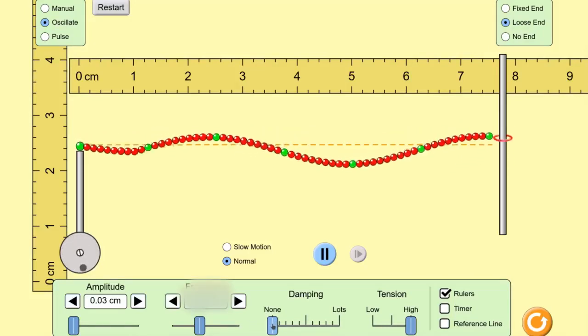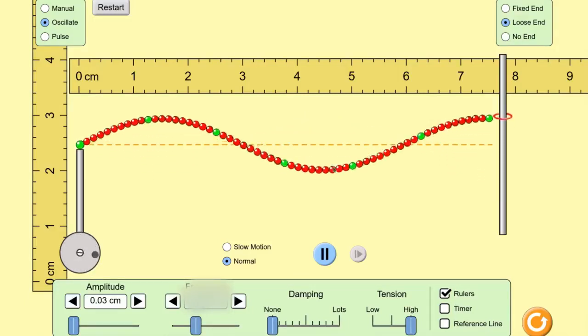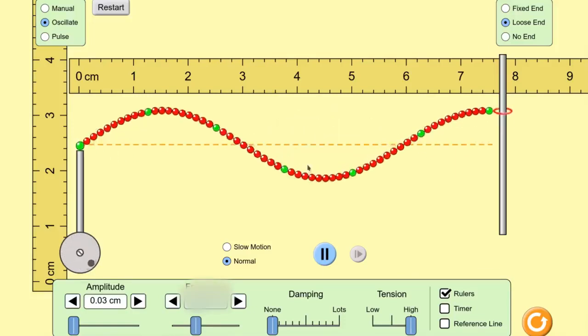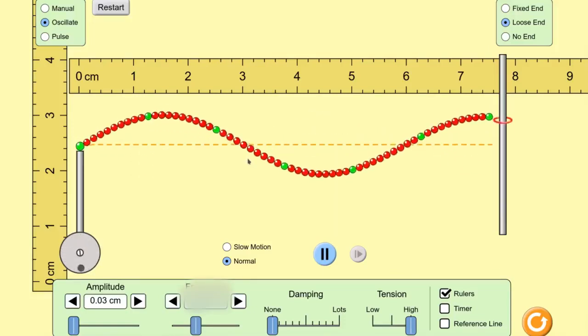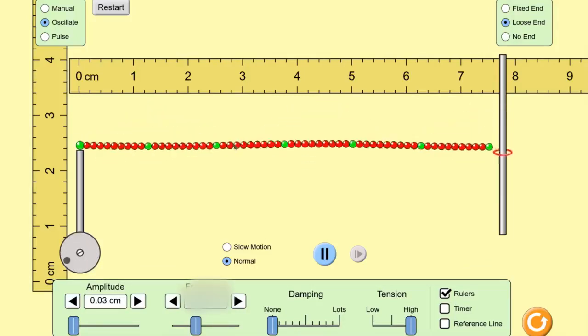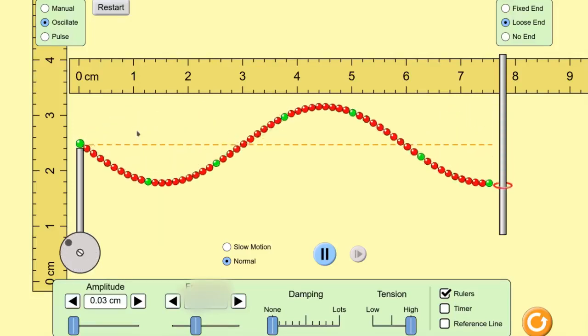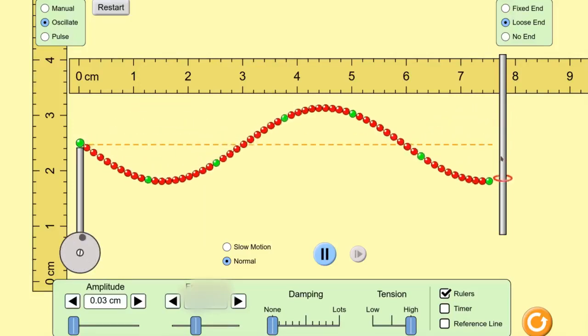Now, because of the different boundary condition, the frequencies at which we hit a resonance are different. With the loose end, you see in this example, we have one, two, three nodes. We also have one, two, three anti-nodes.